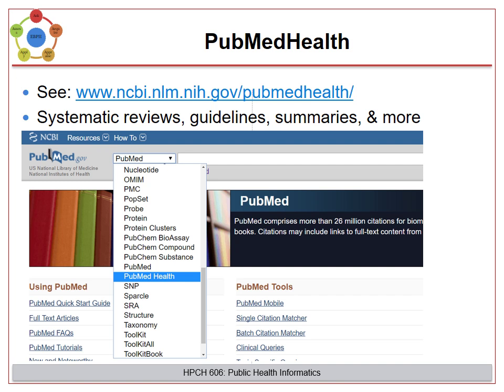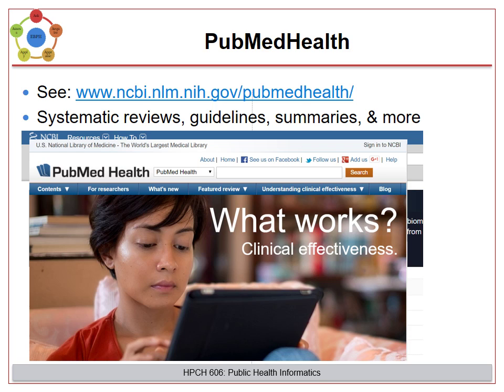PubMed now has a new resource called PubMed Health, which is a collection of systematic reviews from 2013 to now. It includes many systematic reviews already available in PubMed, plus many others. You can get to it by clicking on the drop-down in PubMed and selecting PubMed Health. From there, you will quickly see what's new.